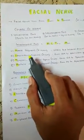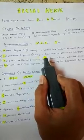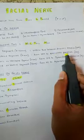The second part is the labyrinthine segment, which is 4 mm in length, which extends from internal acoustic meatus to geniculate ganglion.